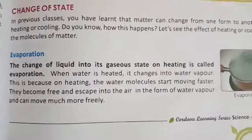Next is condensation. When steam gets cool, it condenses to form water again. This happens because on cooling, the movement of water molecules becomes slower, they start to move close to each other, they become less free to move and thus come closer to form water. The change of gaseous state into liquid state on cooling is called condensation.